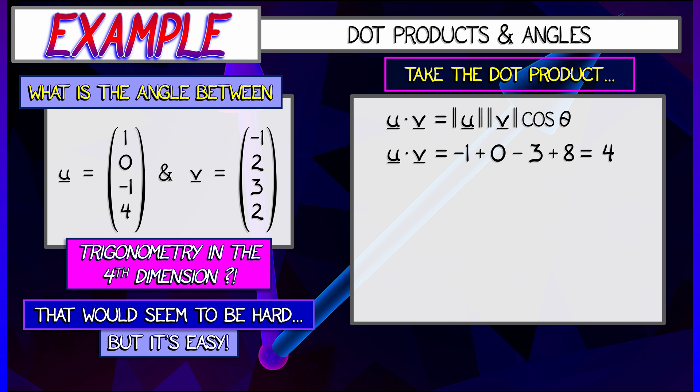Well, this is simple. This is 1 times negative 1, plus 0 times 2, plus negative 1 times 3, plus 4 times 2. You add those terms together, and you get a value of 4.